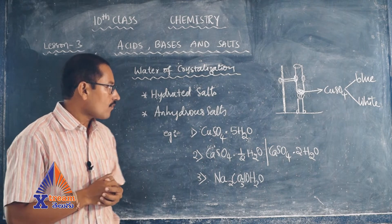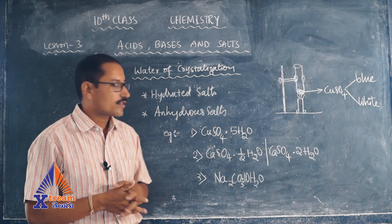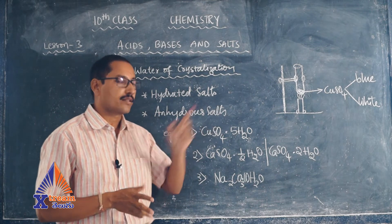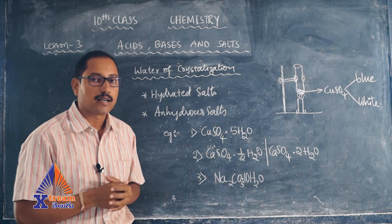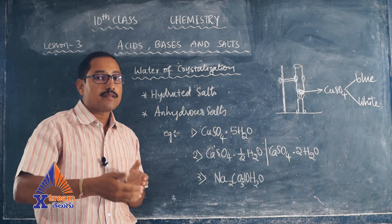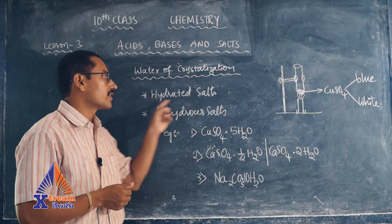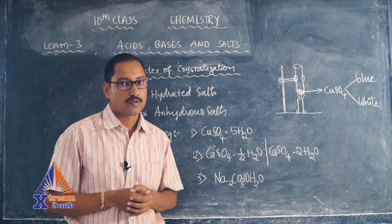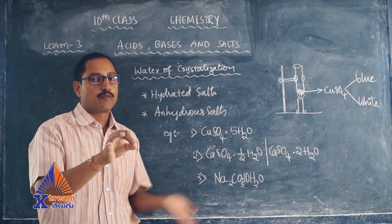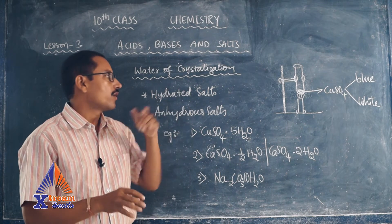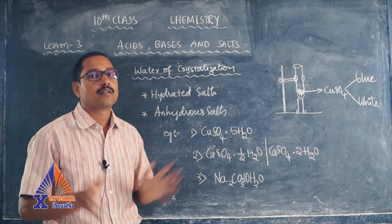Now, if there is no water in the salt then it is called an anhydrous salt. If some water is present in the salt then it is called a hydrated salt. So hydrated salts are salts in which water is present, and anhydrous salts are salts in which no water is present.